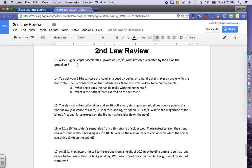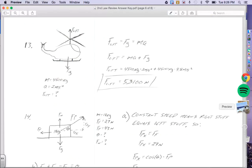A 4,500 kilogram helicopter accelerates upward at 2 meters per second squared. What lift force is exerted by the air on the propellers? Here's our picture of our helicopter. The force of lift from the propellers is going upward. Force of gravity is going downward.